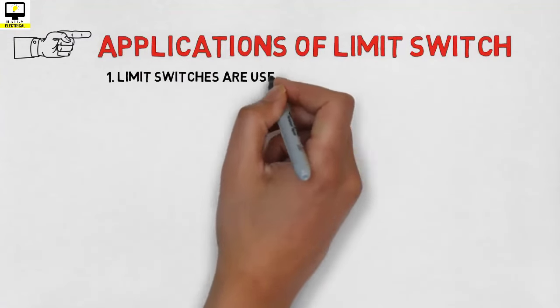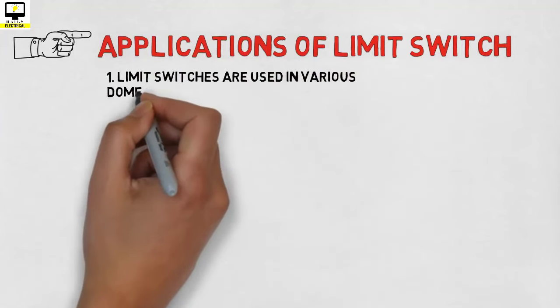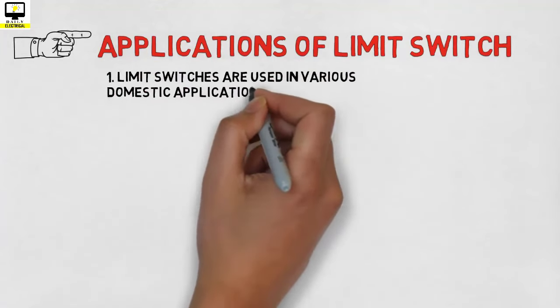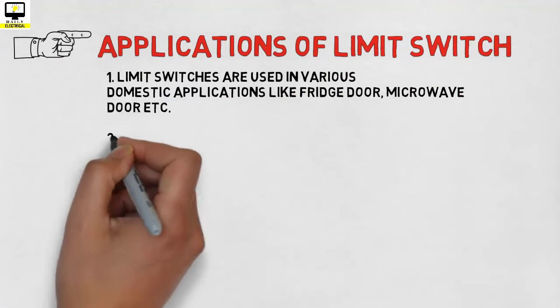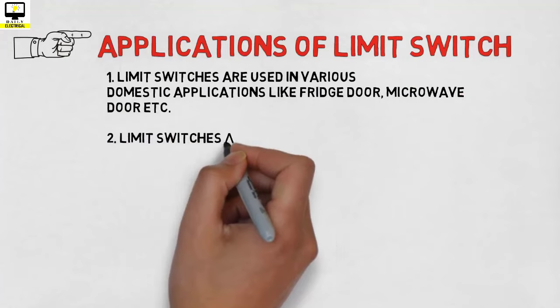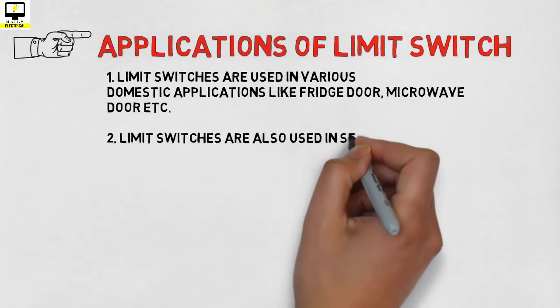Think about your refrigerator door. When you open the door a light is turned on, and when you shut the door the light is off. The reason is the operation of a limit switch that is installed inside the door.